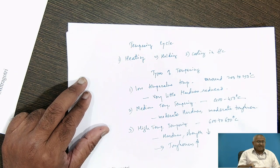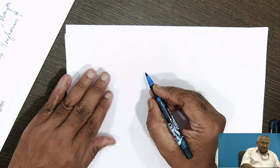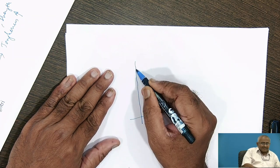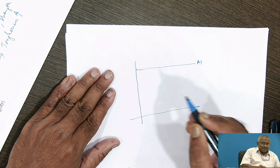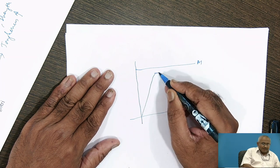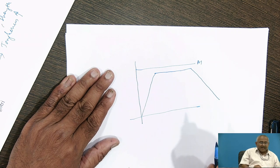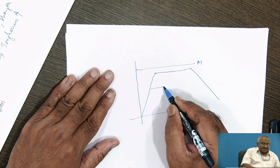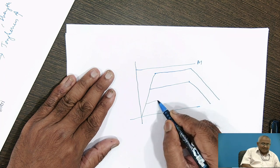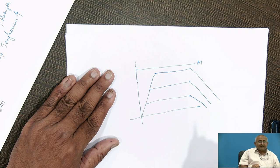This tempering heat treatment cycle can be shown on a temperature versus time graph. The A1 line is shown — we have to heat below the A1 line during tempering. The graph shows high temperature tempering, medium temperature tempering, and low temperature tempering as distinct curves on the diagram.